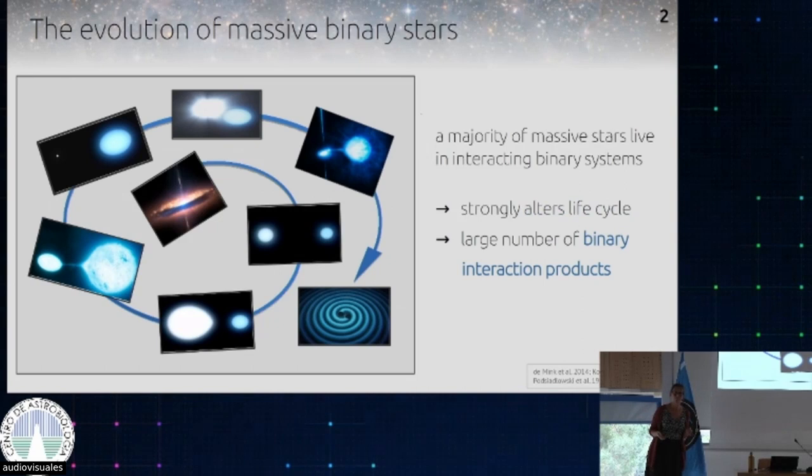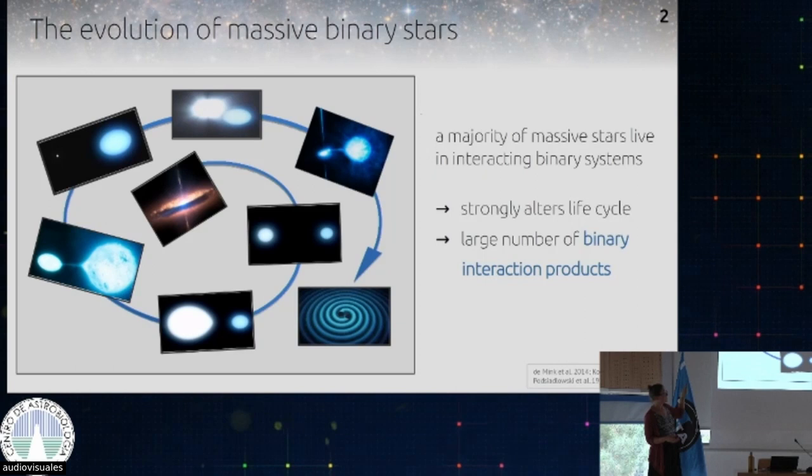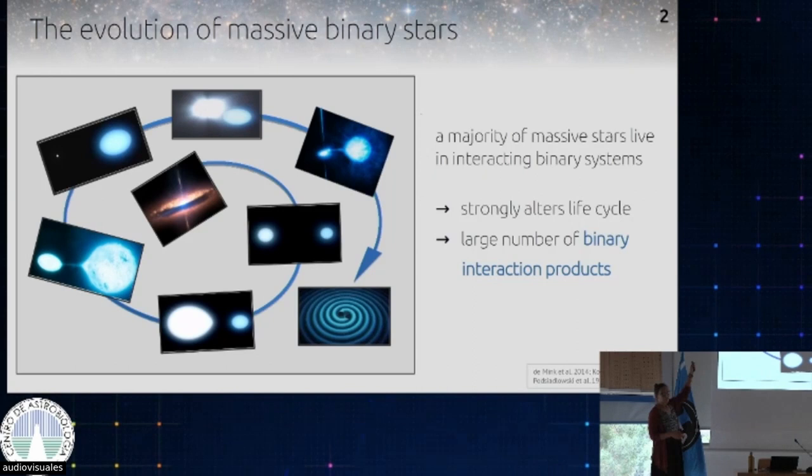A phase of mass transfer happens where one star transfers mass to the other — usually the more massive one, because it evolves faster — and it will lose almost the entirety of its envelope. What is left behind is only the core. Meanwhile, the other star, the secondary, gains a lot of mass but also gains angular momentum and is probably spun up, so it rotates rapidly around its own axis. If the primary that was stripped of its envelope is still massive enough, it might explode.